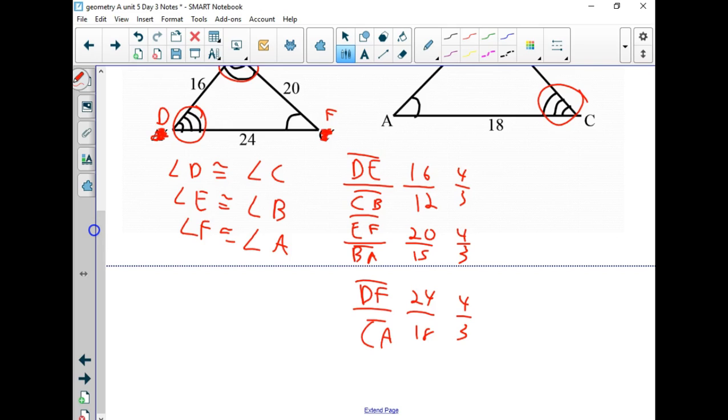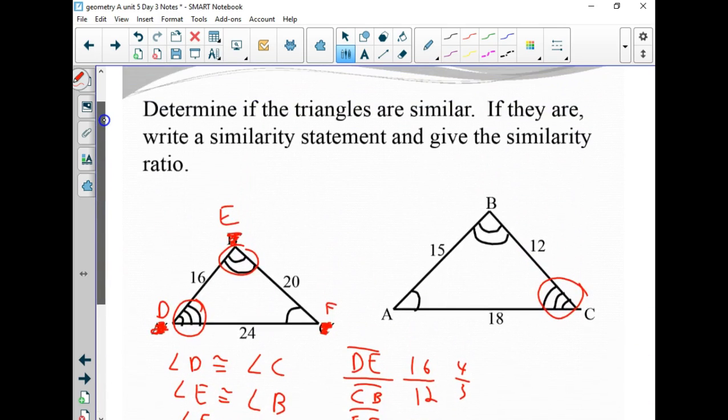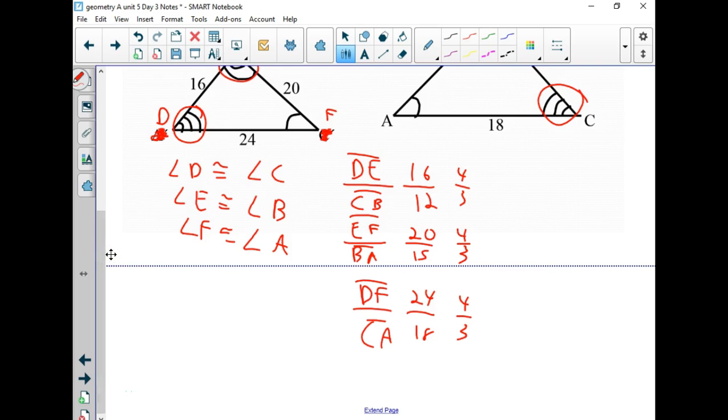So the big one compared to the smaller one is 4 to 3. If we went the other direction, compared to the big, it would be 3 to 4. So now we're going to do a statement and say that triangle DEF is similar to triangle CBA. Because we've proven all the sides are proportional, constant ratio 4 to 3, or 3 to 4, depending on the direction, and all the angles are congruent.